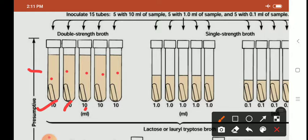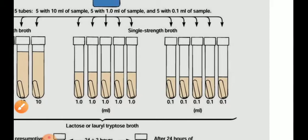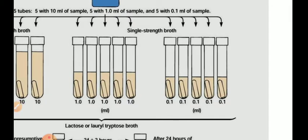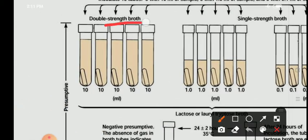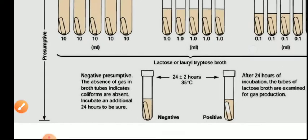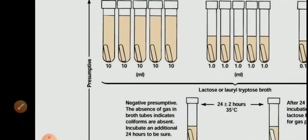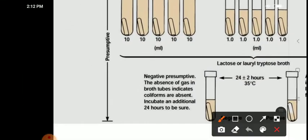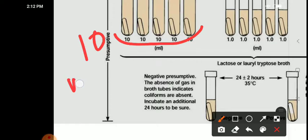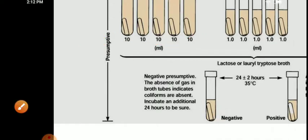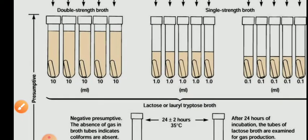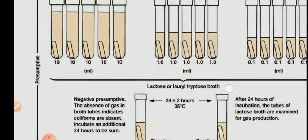In the second set we take 9 ml of single-strength lactose broth, and in the third set we take 9.9 ml of single-strength lactose broth. In the second and third sets, single-strength broth is used, while in the first set we have double-strength broth. After sterilization, in the first set of 5 test tubes we add 10 ml water sample in each tube, in the second set we add 1 ml of water sample, and in the third set we add 0.1 ml of water sample. Incubate, and after 24 hours check whether there is acid and gas production.